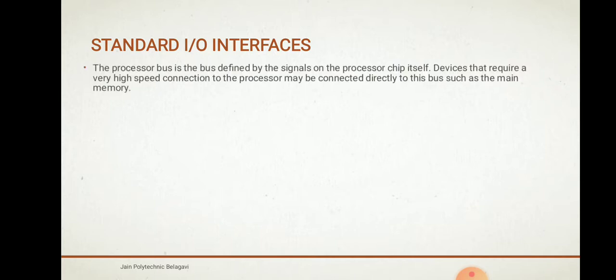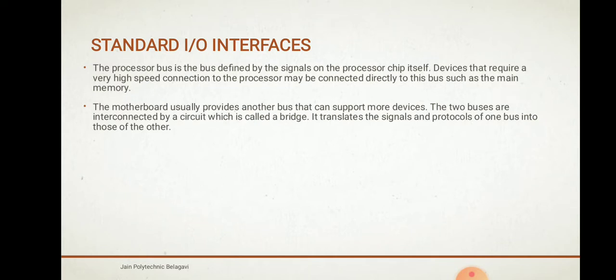The processor bus is a bus defined by the signals on the processor chip itself. Each processor contains a processor chip, so the processor bus is defined by the signals which are generated on the processor chip itself. Devices that require a very high speed connection to the processor may be connected directly to this bus — for example, the main memory.